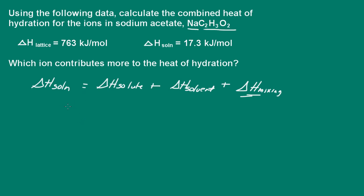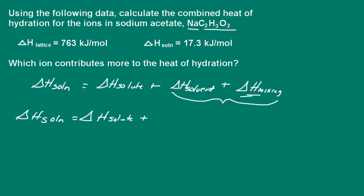So let's go back to what we have here. We have the solvent enthalpy and mixing enthalpies. Determining each one of these individually is difficult, so what we do is combine them — together they're equal to the enthalpy change for solvation. So delta H for the solution equals delta H for the solute plus, combining those two terms, the heat of hydration. Remember, that's because the solvent is water — so delta H hydration.